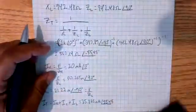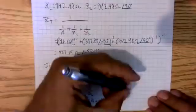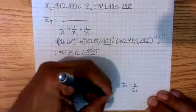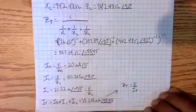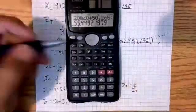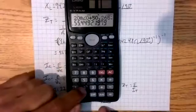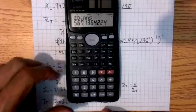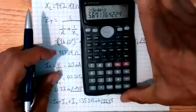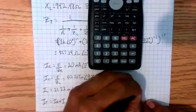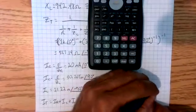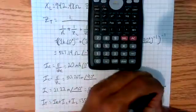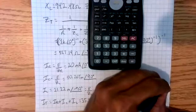So if I take that, and I say ZT is equal to E over IT, I already have my answer stored here. So E is 20. So it's 20 divided by the answer. I get 567.14. Oh my God, it worked. 567.14, an angle of negative 55.45.